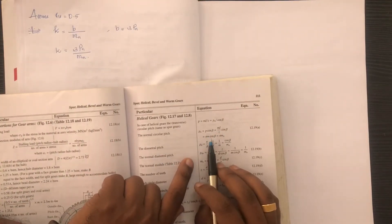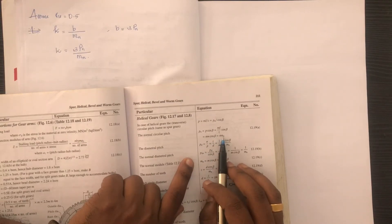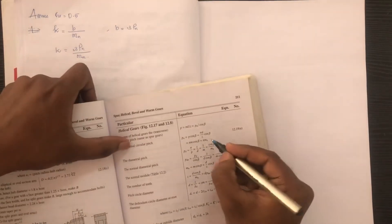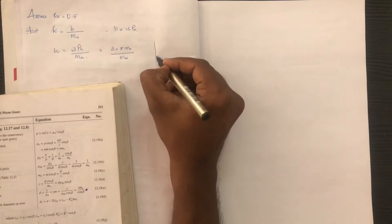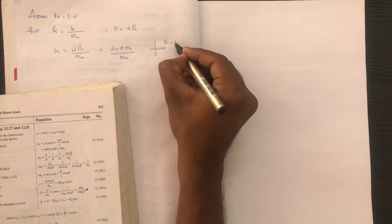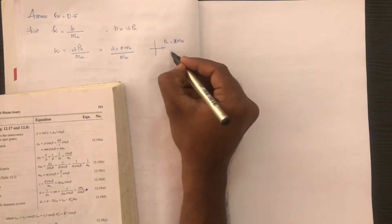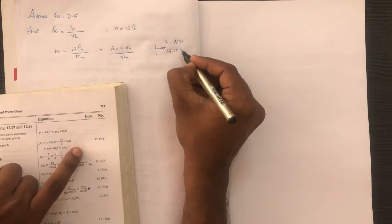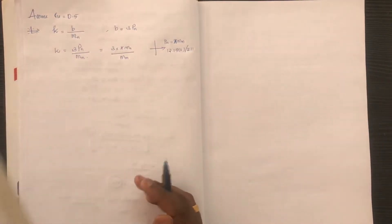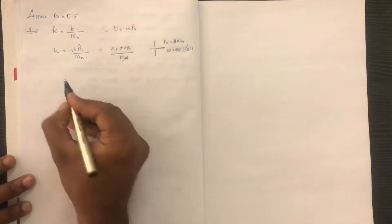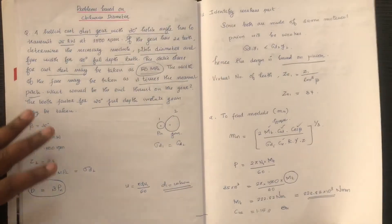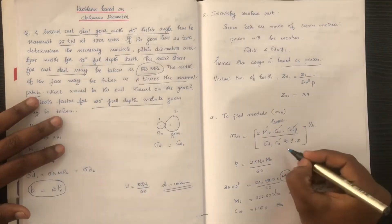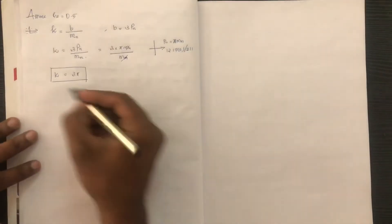Pn is equal to pi into mn (normal circular pitch). Substituting 3 pi into mn, we verify the relationship. After simplification, K is equal to 3.5.